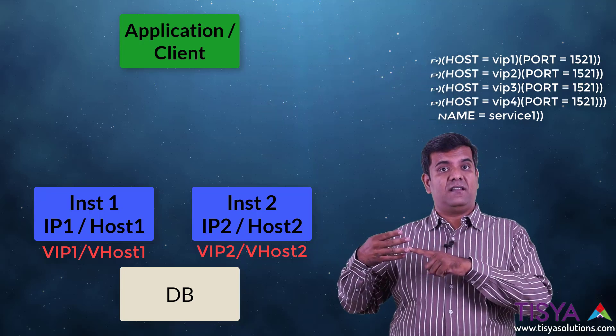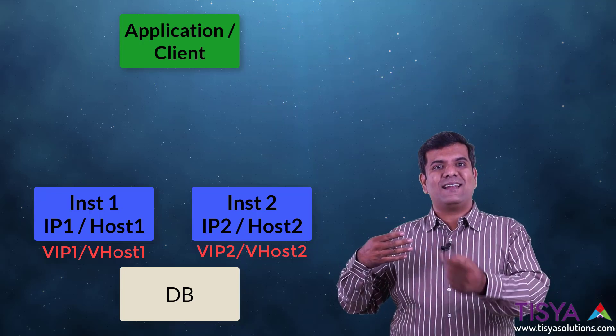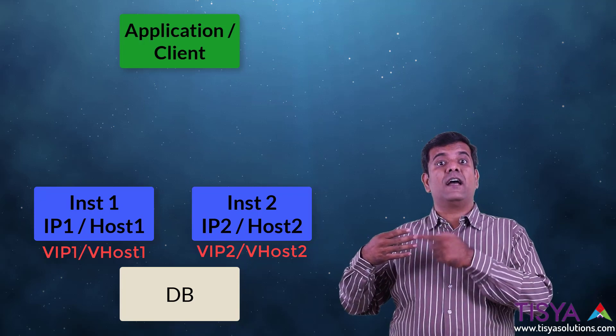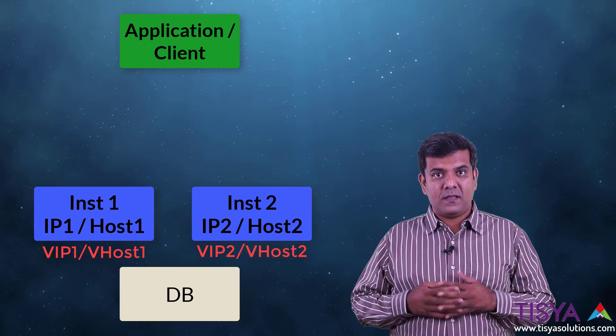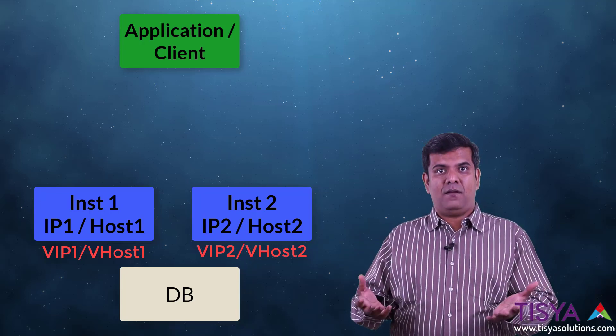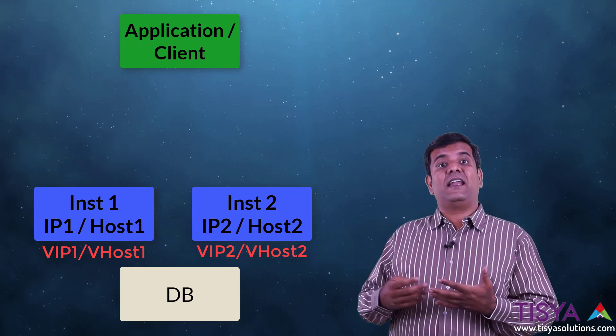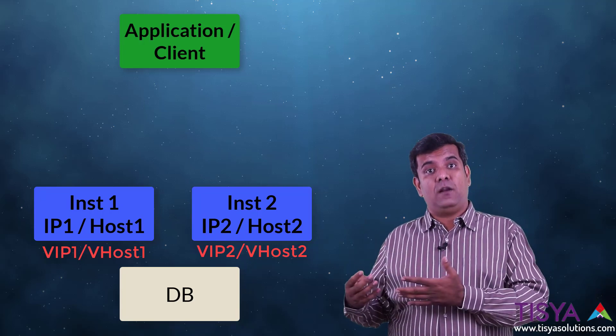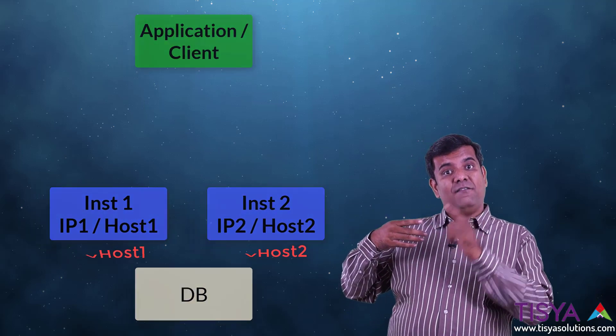If the first VIP doesn't connect, it will try the second, then the third, and so on. That is how VIPs come into play in an RAC environment. The application need not necessarily know which nodes are up — the connection process itself takes care of connect-time failover. If node 1 has failed, the VIP on node 1 would have failed over to one of the remaining nodes, and when a connection request comes in, it will immediately tell the client it is not available and to try another node.